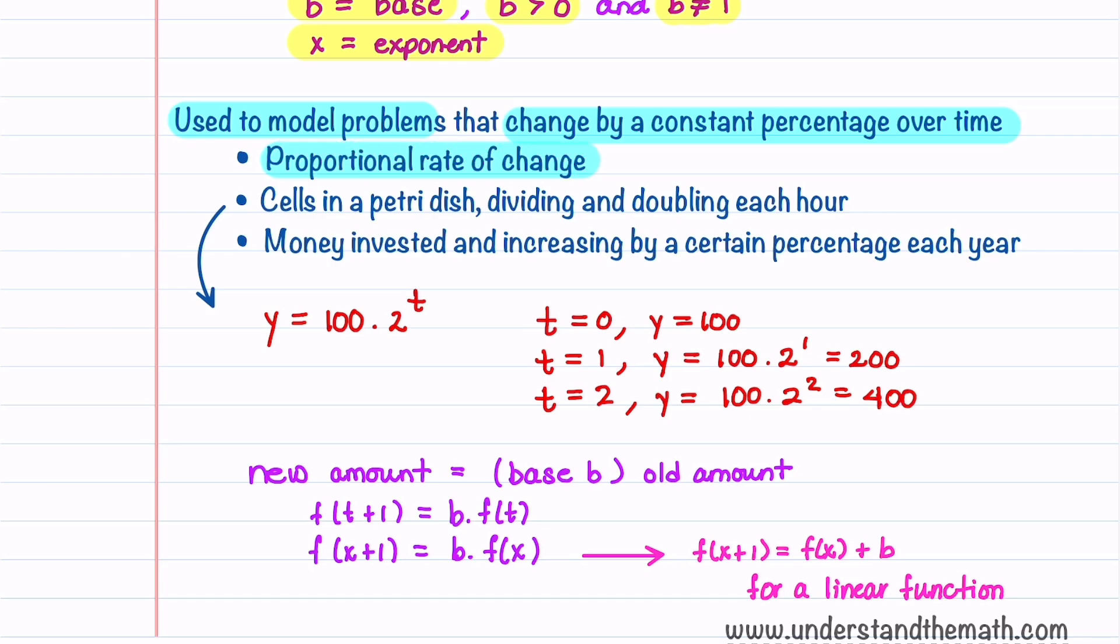I'll show you two examples of this. The first is when you have cells in a petri dish that divide and double each hour. This can be modeled by an equation y equals 100 times 2 raised to the t. Let's see how this represents what we call a proportional rate of change. When t is 0, y is going to equal 100. When t is 1, y equals 100 times 2 to the first power, which equals 200. And when t is 2, y equals 400. The function is changing at a rate proportional to its current value. Each year the amount is multiplied by 2, or doubles.